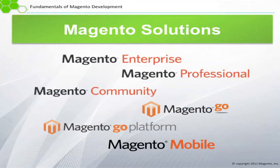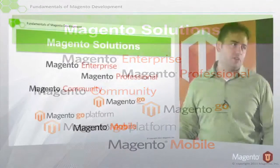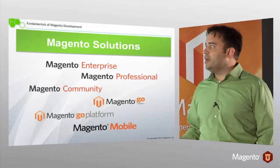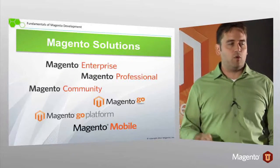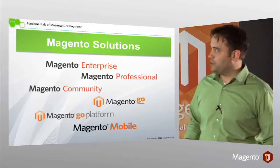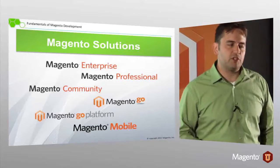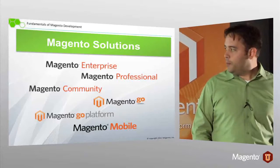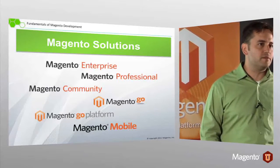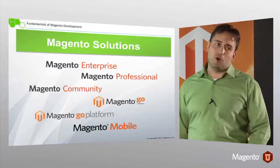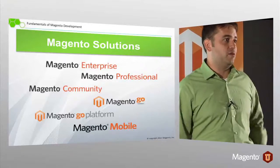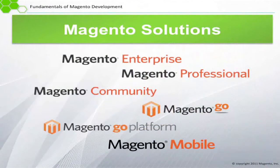There are different solutions with Magento. Magento Enterprise is basically the code we'll be working with, and it is based on Magento Community. Magento Professional builds on Community as well, with not quite as much as Enterprise. There's also Magento Go and the Magento Go platform — I think Magento Go platform is still in beta — but these are turnkey e-commerce solutions, as well as Magento Mobile, which is a subscription service you can use to get your store onto iPads, iPhones, and Android platforms.